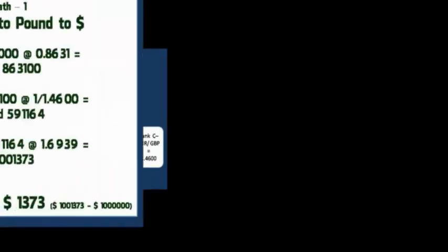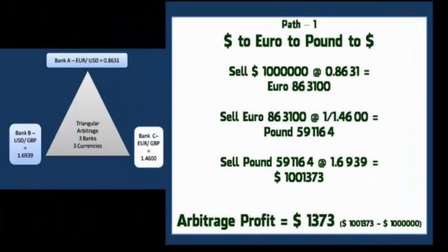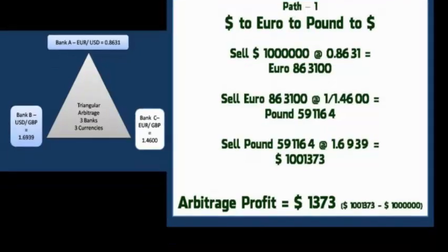In this example, we are following Path 1: Dollar to Euro to Pound to Dollar. We started with selling 1 million Dollars, converted it first to Euro, then to Pound, and finally ended up with $1,001,373. We made an arbitrage profit without investing a penny.